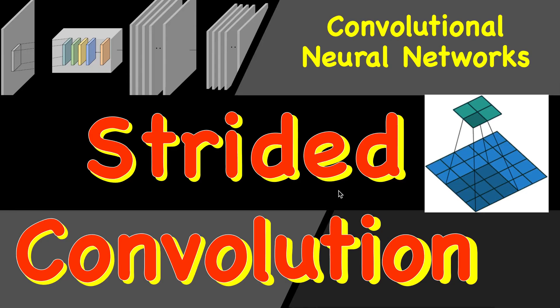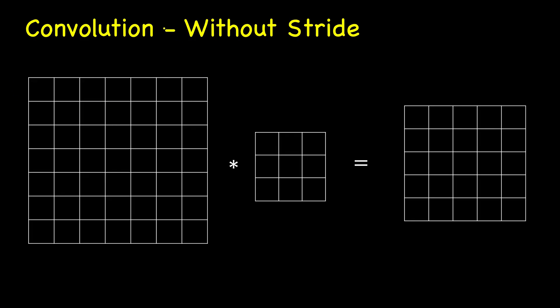Strided convolution is another important building block of convolutional neural networks. So far we have seen normal convolution and padded convolutions, so let's see what are strided convolutions.